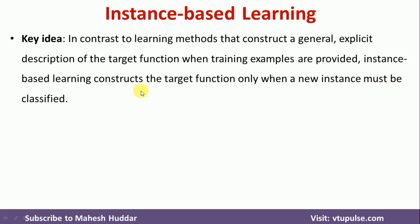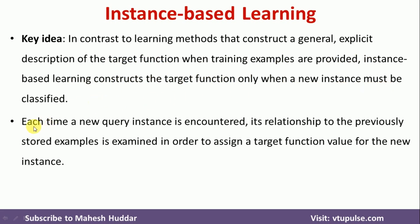In general learning methods like SVM, Bayesian classification, or decision trees, they construct the target function when the training examples are provided — as and when the training examples are given, those algorithms construct the description of the target function. But in instance-based learning, the target function is constructed only when a new instance is to be classified. Whenever a new instance or query is encountered, its relationship to the previously stored examples is examined in order to assign a target function value.